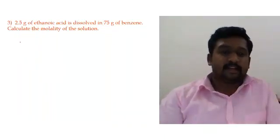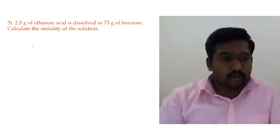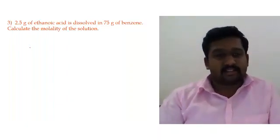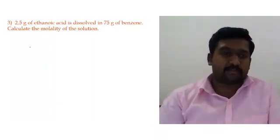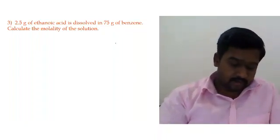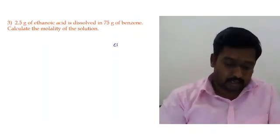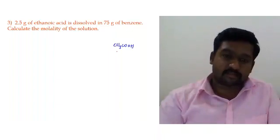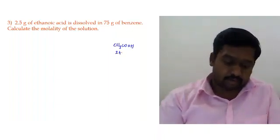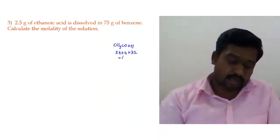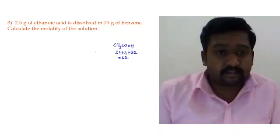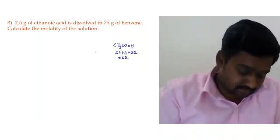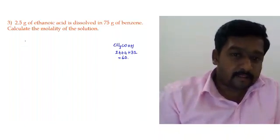Problem 3: 2.5 grams of ethanoic acid is dissolved in 75 grams of benzene. Calculate the molality of the solution. Ethanoic acid is CH₃COOH. Calculating its molecular mass: 24 from carbons, 4 from hydrogens, and 32 from oxygens — the total molecular mass of acetic acid (ethanoic acid) is 60.